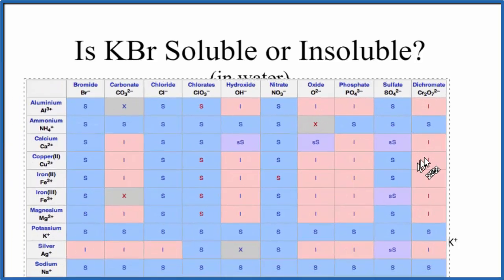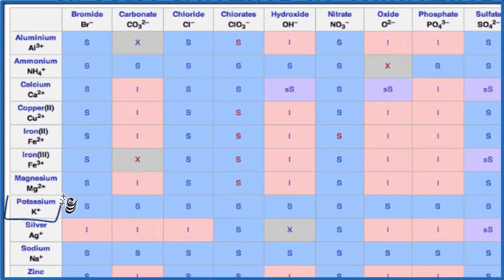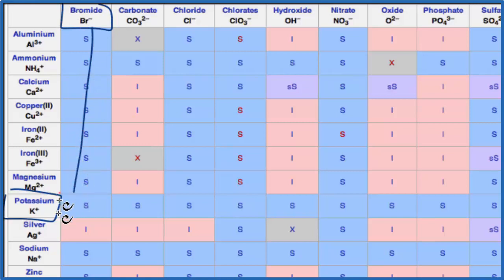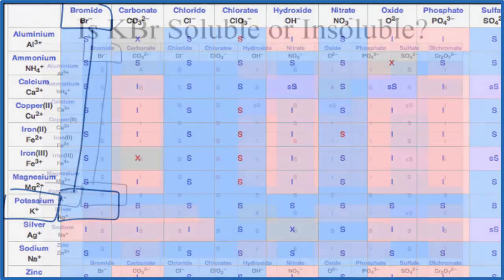We could also look at a solubility chart. Here's our solubility chart. We find potassium right here — that's K+ — and then we're looking for the bromide, which is right here next to it. So we go down and we see potassium bromide has an S. That S means that it's soluble in water. When you put this in water, it'll dissolve and dissociate into its ions: K+ aqueous, and then the bromide ion, aqueous as well.